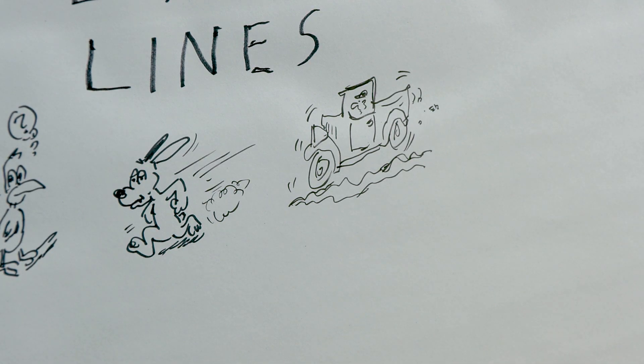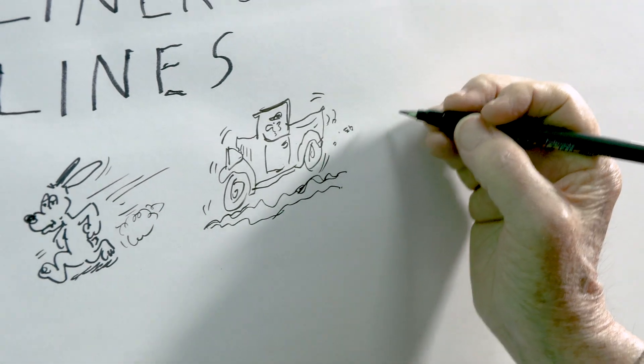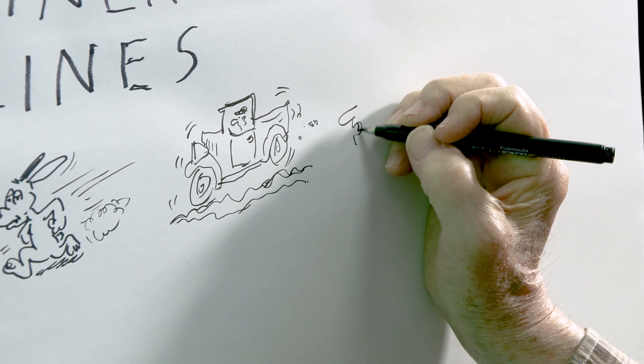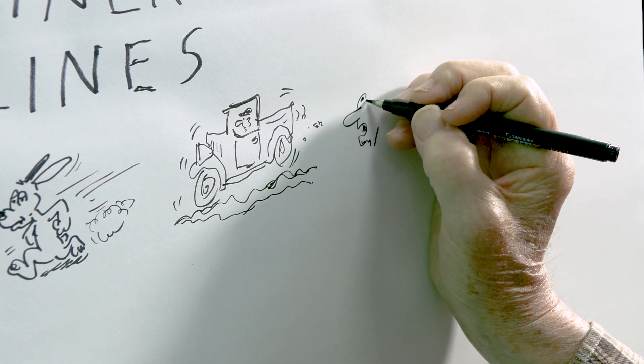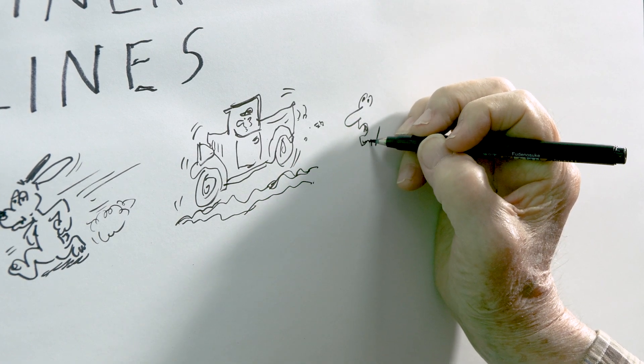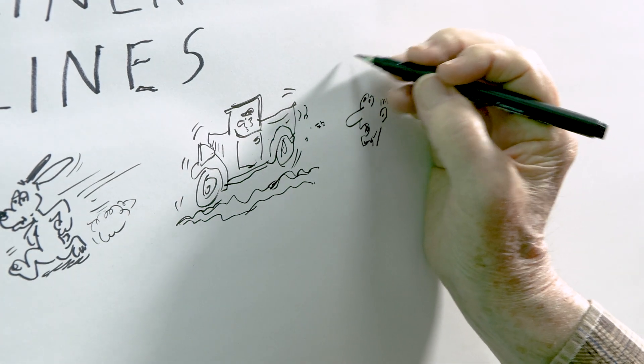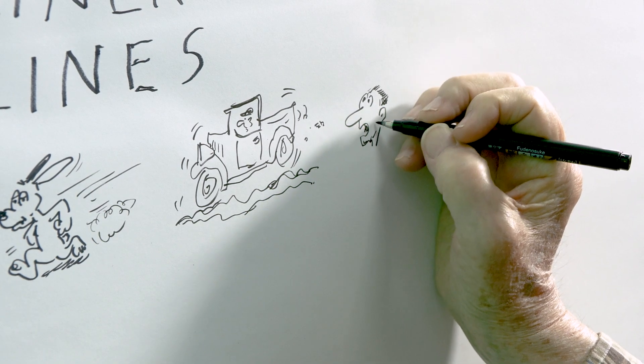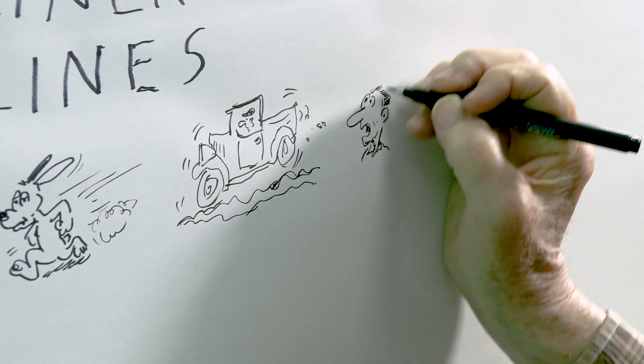Well, oftentimes I draw people who are scared of something. Well, here's a guy who is looking up at the sky. I won't draw it because it's too high up, but he sees a huge seagull flying toward him.